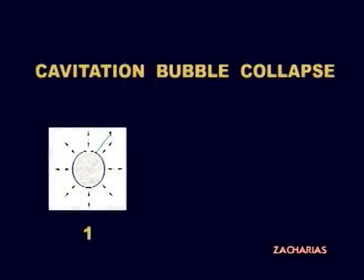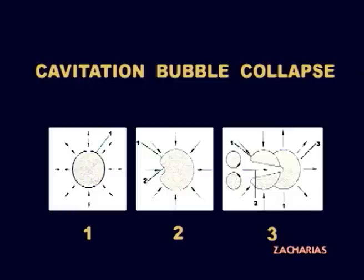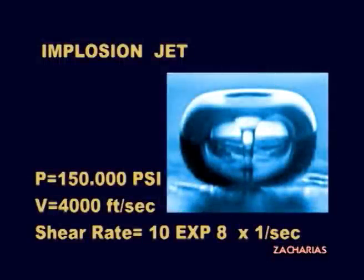The origin of the shockwave is a strong microjet originating at a single point in the cavity wall when it starts to collapse. The waterjet travels across the bubble at 4,000 feet per second and impacts the opposite side of the bubble wall with a pinpoint pressure of 150,000 pounds per square inch, creating the shockwave.